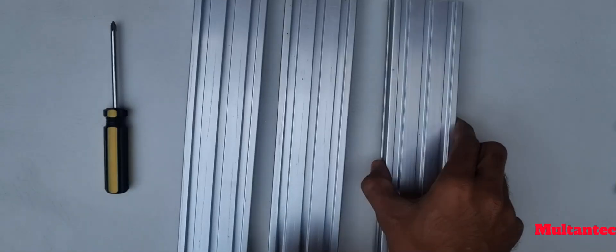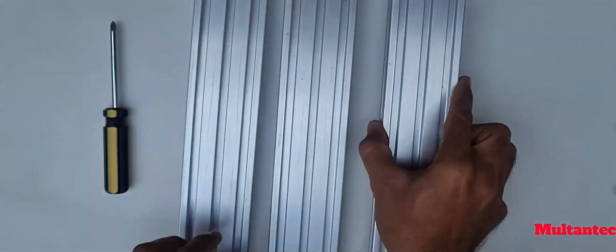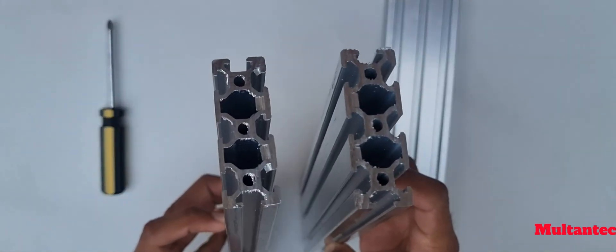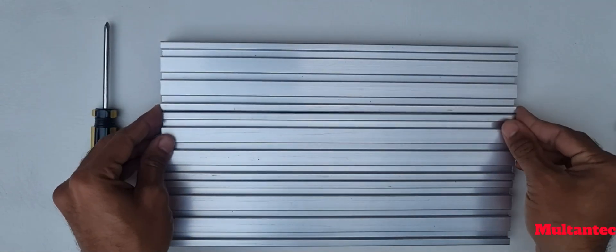First of all we have to make a bed for our machine. As we know our machine has work area of 30cm by 18cm, so I am using 2060 T-slot aluminum profiles, 3 pieces cut to the length of 300mm for each.